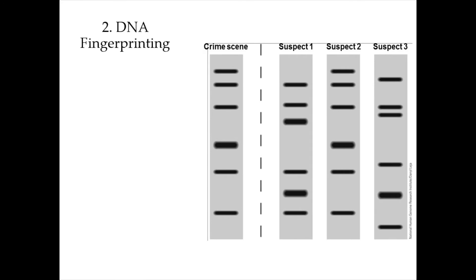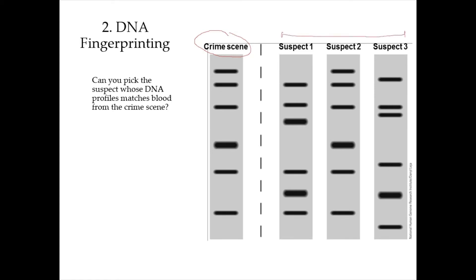Did you read the news about the robbery just now? Can you pick the suspect whose DNA profile matches the blood from the crime scene? To analyze the DNA profiles, we need to compare and find matching DNA patterns of the blood found at the crime scene with the DNA patterns of the three suspects. Suspect 2 has the matching DNA patterns with the blood found at the crime scene.